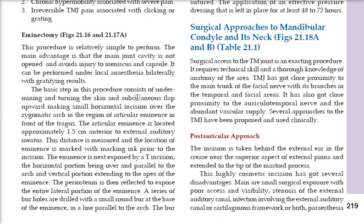Surgical access to the TMJ is an exacting procedure requiring technical skill and thorough anatomical knowledge. The TMJ lies near the main trunk of the facial nerve and its branches in the facial and temporal areas. There is also close proximity to the auriculotemporal nerve, and the vascular supply in this region is abundant.